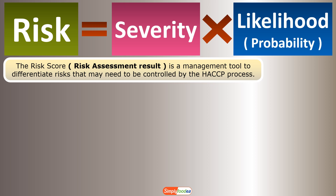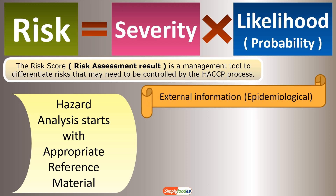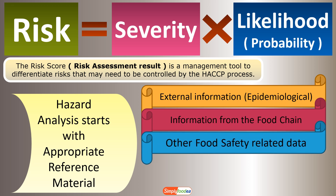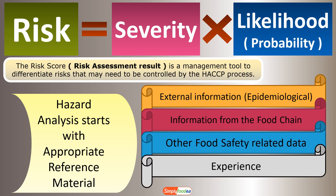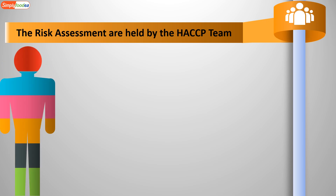When we conduct the hazard analysis, we must have reference material. Some of this comes from cooperation within the HACCP team. References include external information — whether epidemiological data, information from the food chain, other food safety-related data, or from the experience of the HACCP team members who are holding all the risk assessment knowledge.